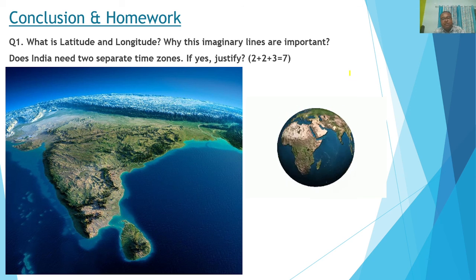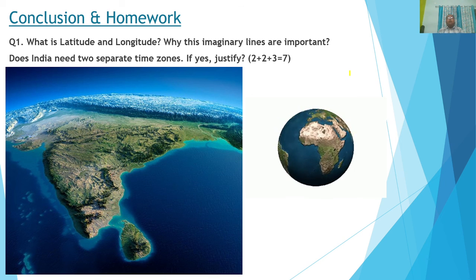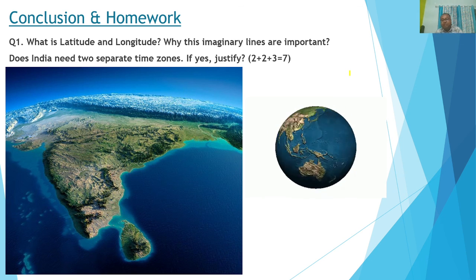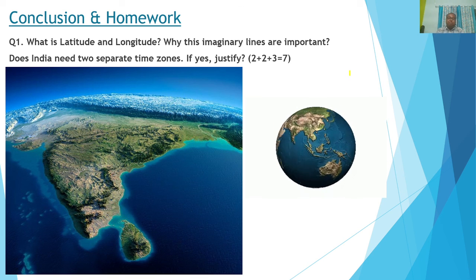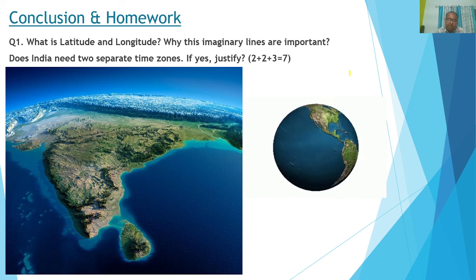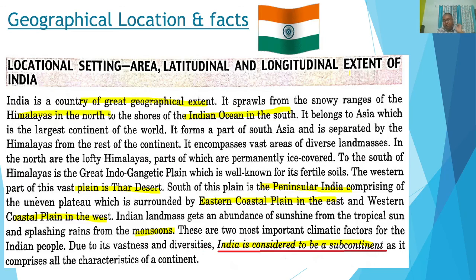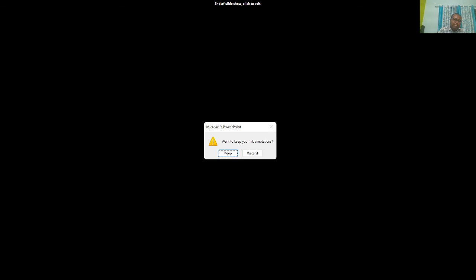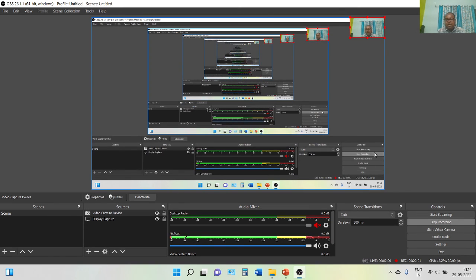We are in the last portion of this lecture. As homework, please try to answer: What is latitude and longitude? Why are these imaginary lines important? Does India need two separate time zones? If yes, justify your answer. This is a 7-mark question — try to attempt it. I will make a link in Google Classroom where you can submit your answer script. Maps are very important, so please review them. I will provide study materials. That's all about part one of this lecture. We will do part two in the upcoming session. Thank you everyone, take care.